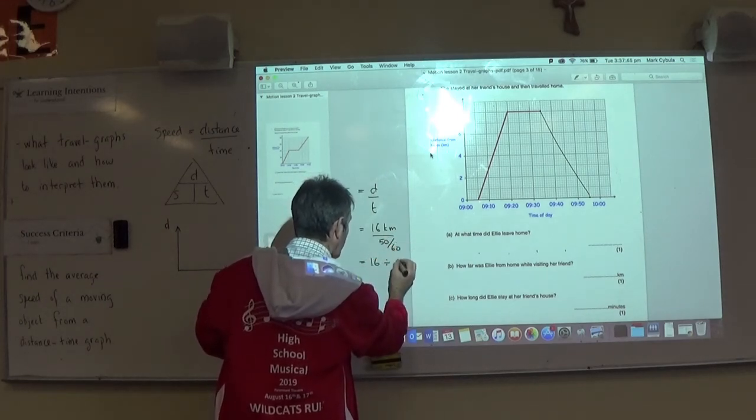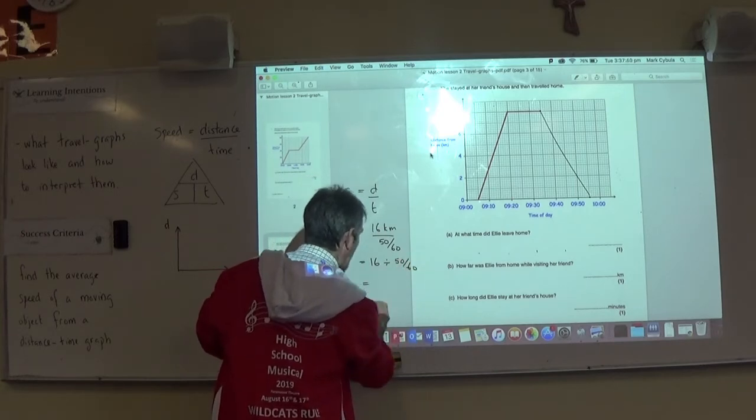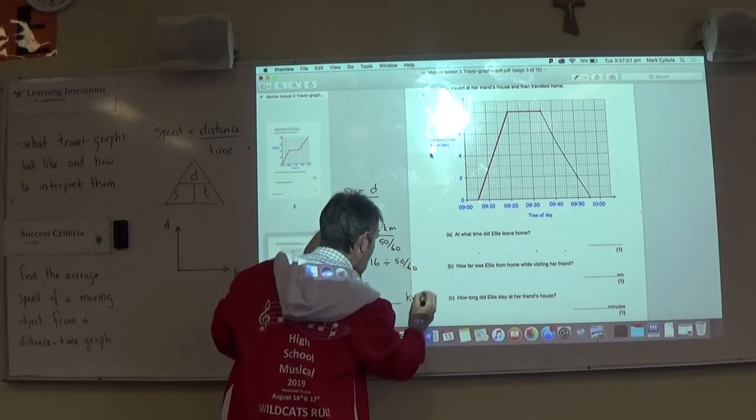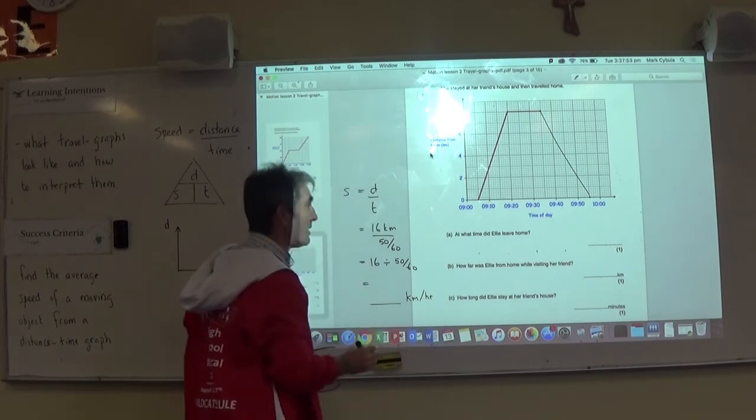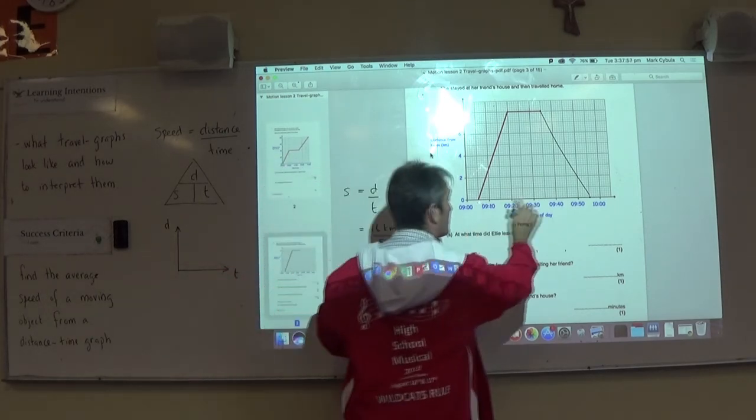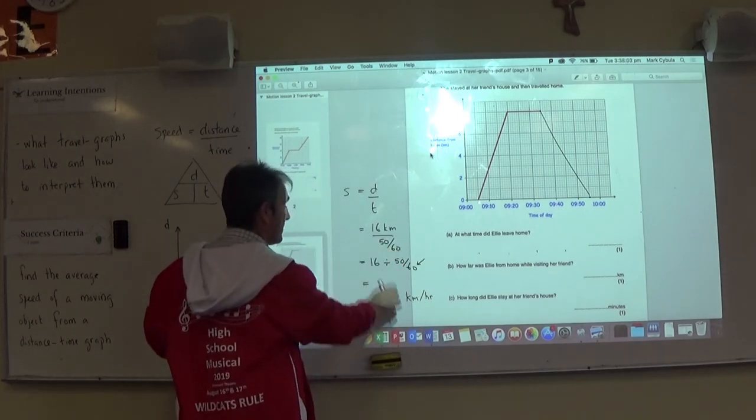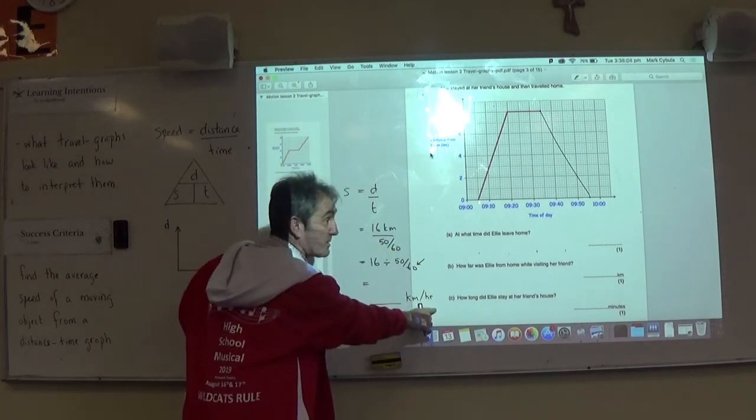So 16 divided by, over here, and that will give me my average speed in kilometers per hour. Notice the reason for the 60 is that there are 60 minutes in one hour. I don't go 16 divided by 50 to get the kilometers per hour as my average speed.